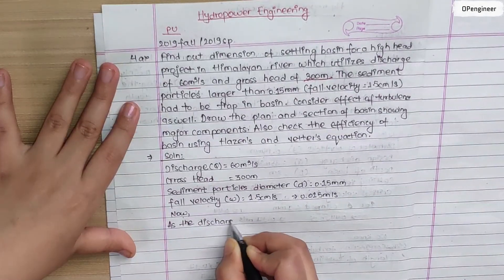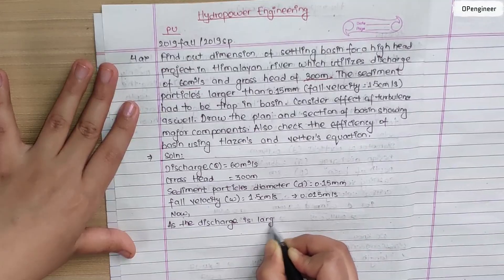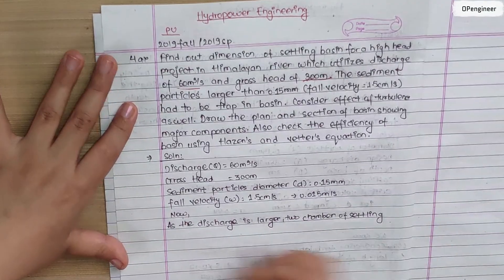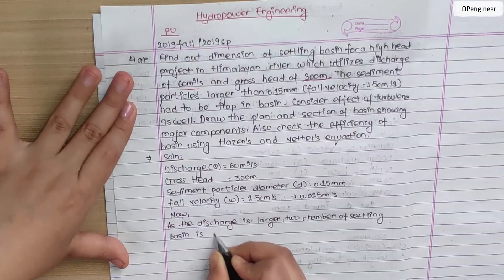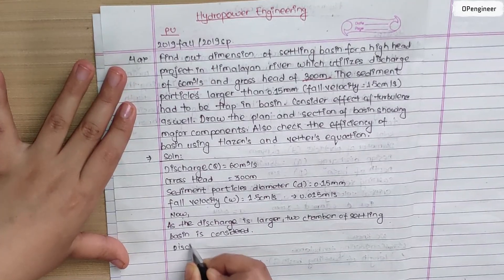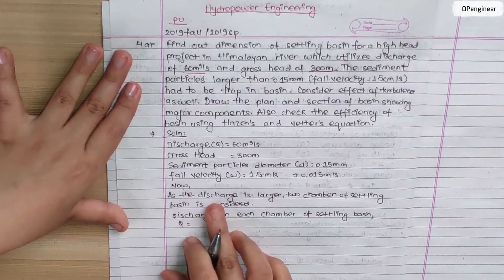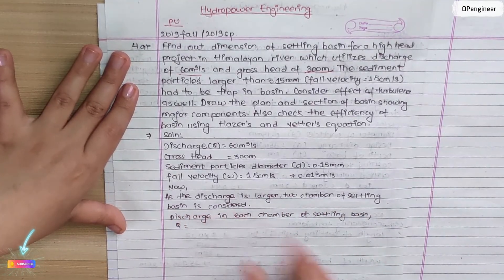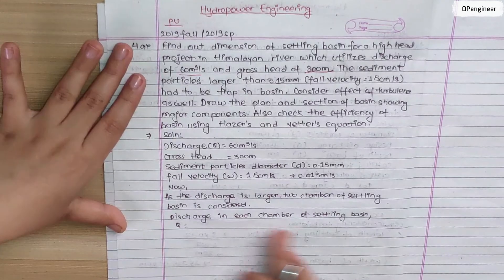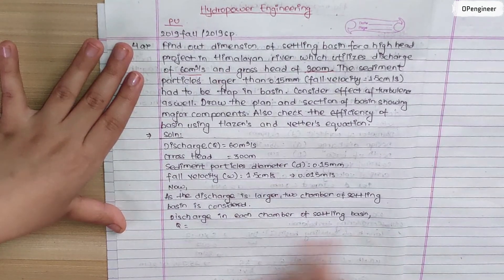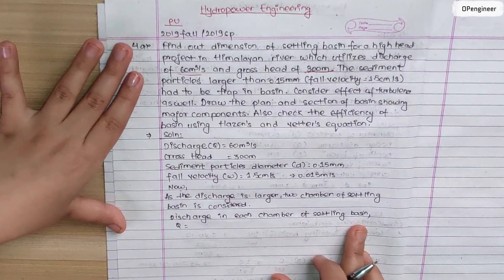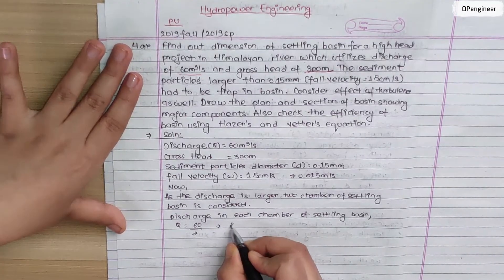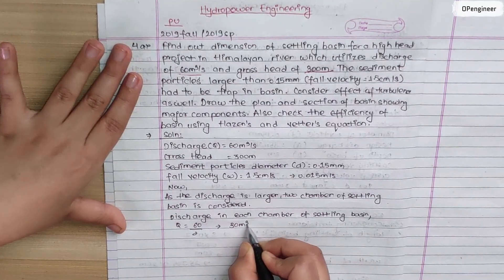As the discharge is large, two chambers of settling basin are considered. The discharge in each chamber of the settling basin is 60 divided by 2, giving a discharge of 30 cubic meters per second per chamber.